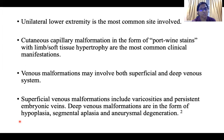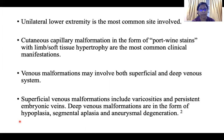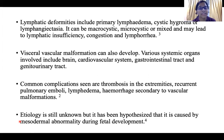Unilateral lower extremity is the most common site involved. Cutaneous capillary malformations can be in the form of port-wine stains with limb or soft tissue hypertrophy. Venous malformations may involve both superficial and deep venous systems. Superficial venous malformations include varicosities and persistent embryonic veins. Deep venous malformations include hyperplasia, segmental aplasia, or aneurysmal degeneration. Lymphatic deformities include primary lymphedema, cystic hygroma, and lymphangiectasia, which can be microcystic, macrocystic, or mixed, leading to lymphatic insufficiency, congestion, or lymphorrhea.